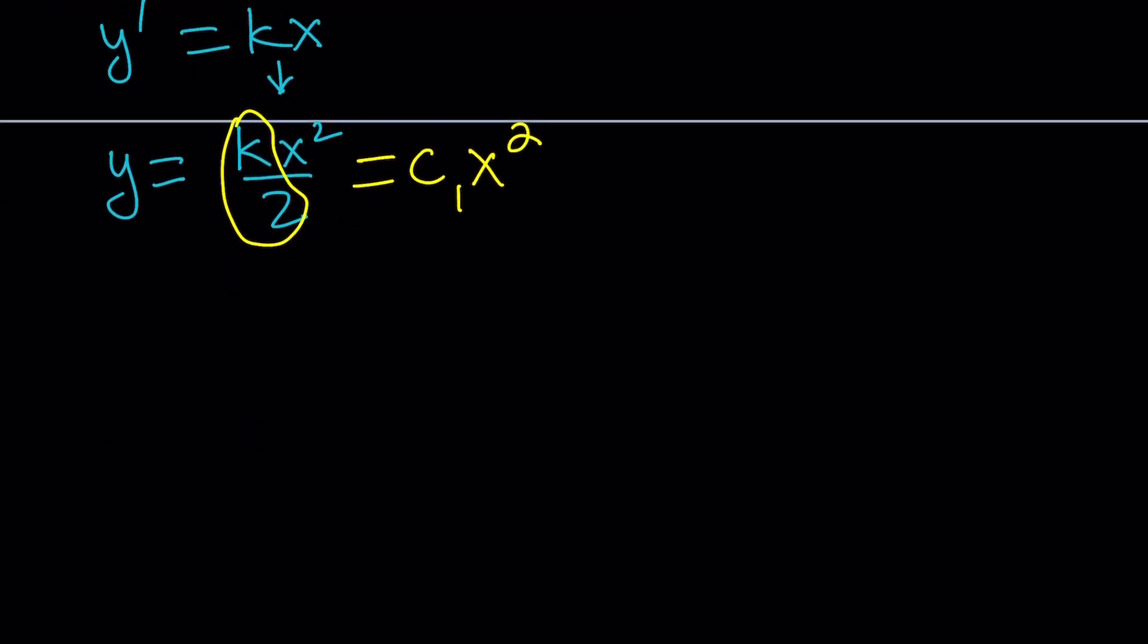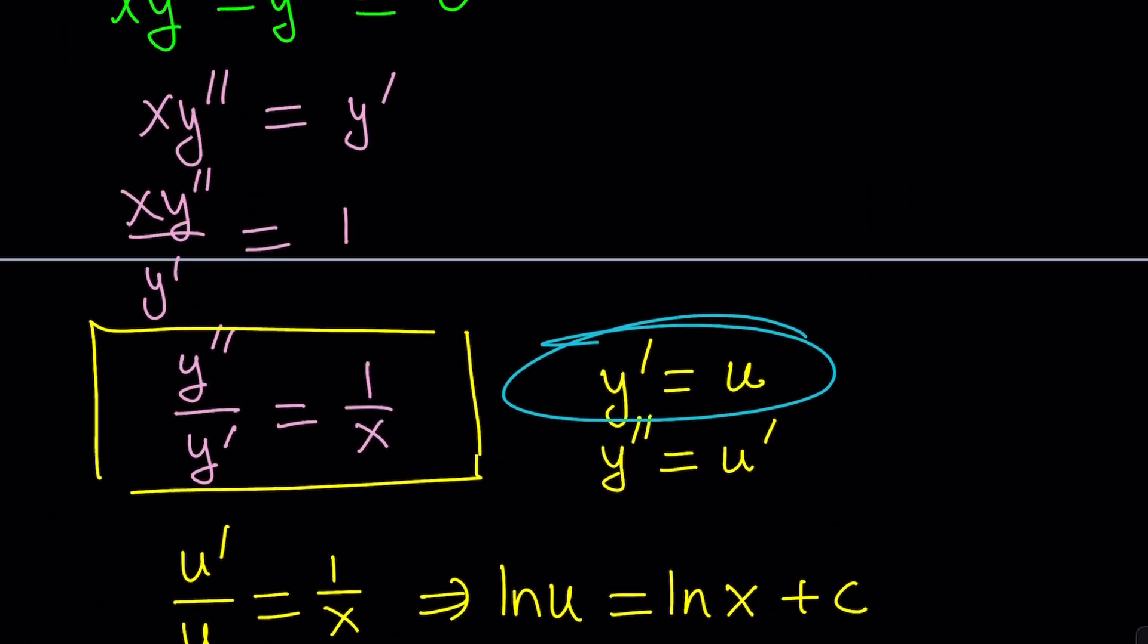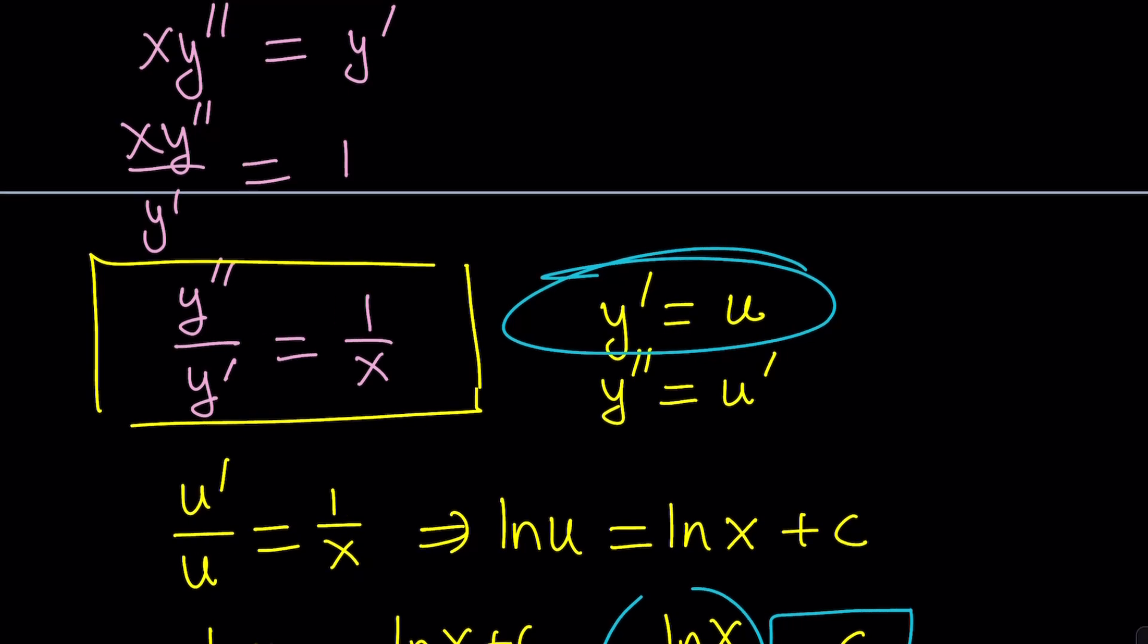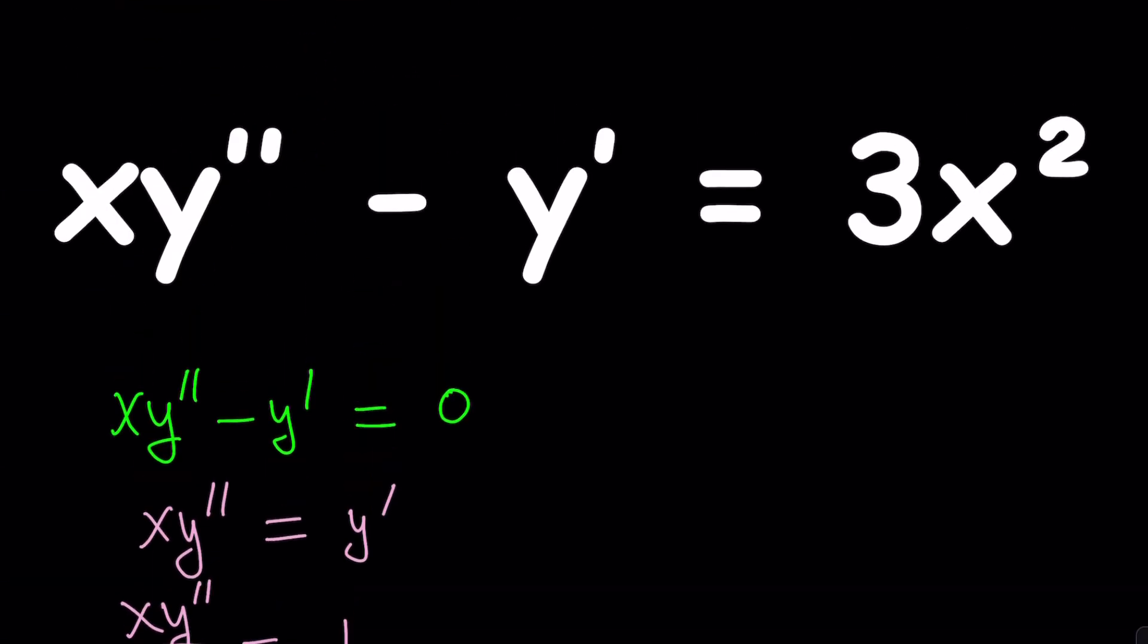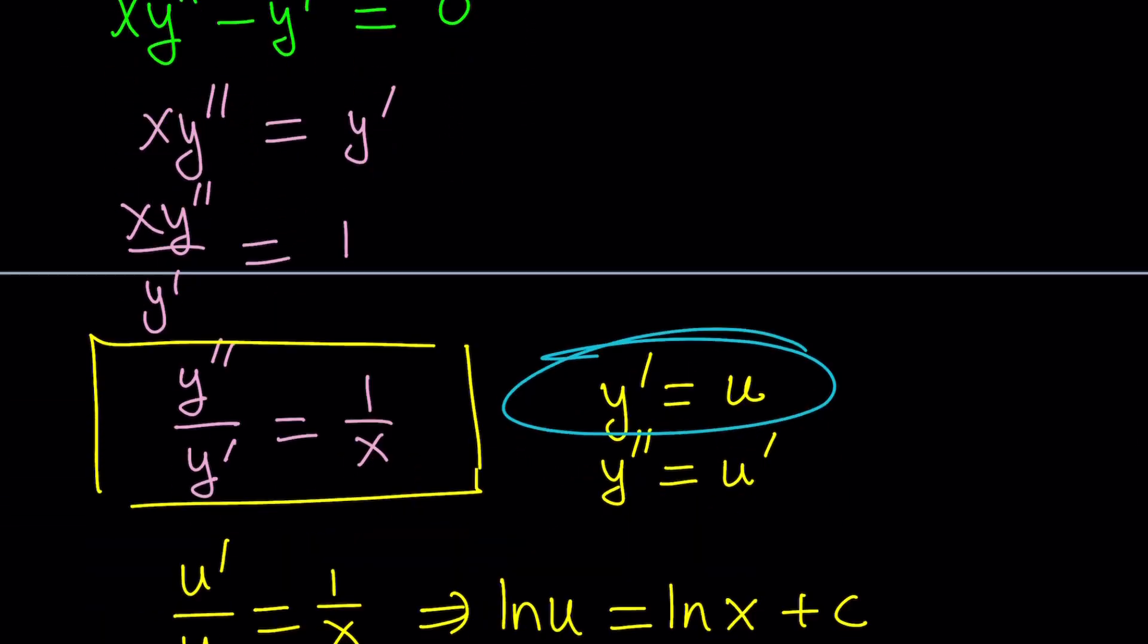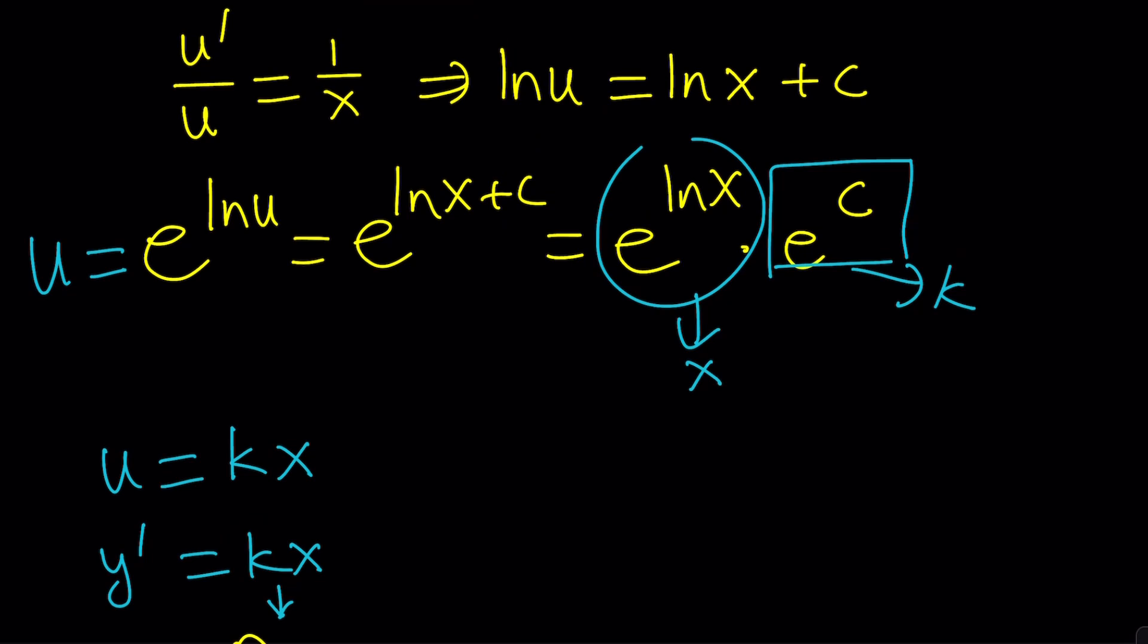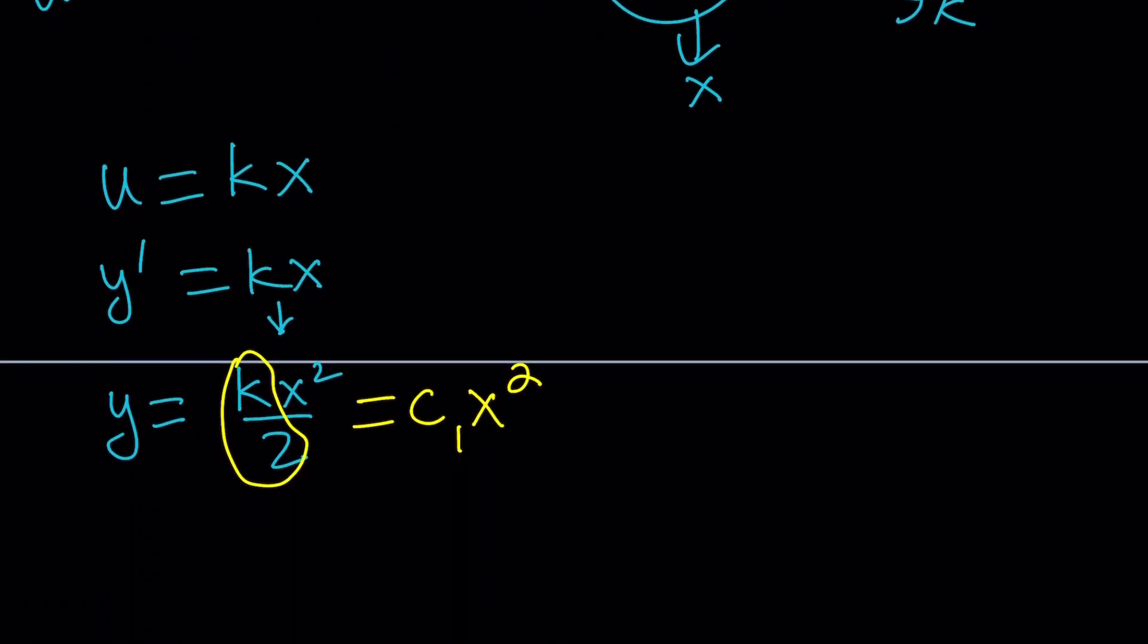Now, we got y value, but wait a minute. Is that the only solution for this equation? Well, I guess at least for the homogeneous case, right? Looks like the homogeneous case is going to consist of this one. So we basically got the u value, which is k times x. And then, from the u, we went to the y value.